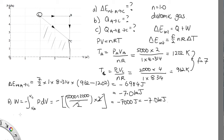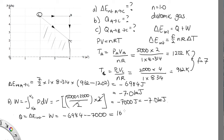Now we've been asked to find how much heat is added. Q is equal to the change in internal energy minus the work done. So we use our exact number, minus 6,984, minus minus 7,000. These add together, they almost cancel out, and we end up with 16 joules of heat added.